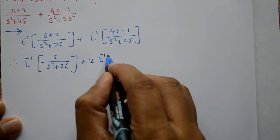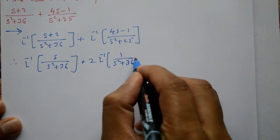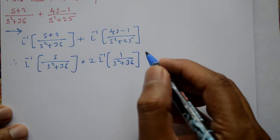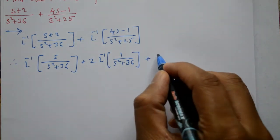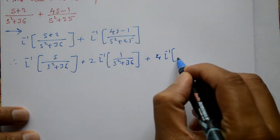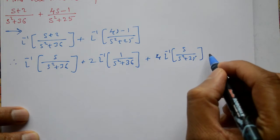Plus, for the second term, 4s by this denominator. 4 is a constant, take outside: 4 times inverse of s by s squared plus 25. The next step...